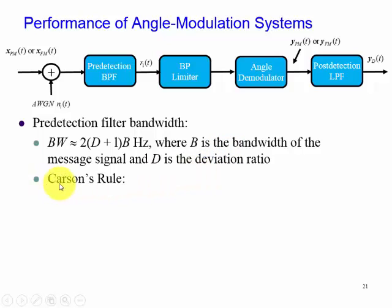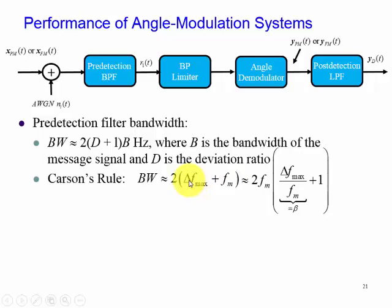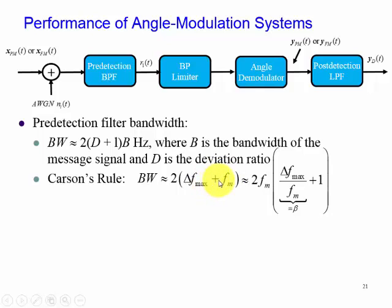For the case of Carson's rule for a sinusoid, we can simplify the problem such that our message is only a sinusoid having a frequency of fm. We can factor out fm, and then we have delta f max over fm, which we call the modulation index for an FM signal, as discussed in chapter 5, plus 1. So if there's a lot of frequency deviation compared to the message frequency, we can approximate this and say the bandwidth is essentially 2 delta f max.